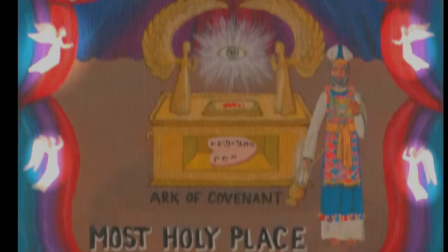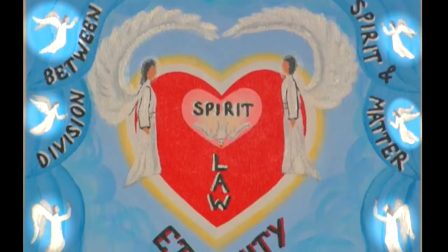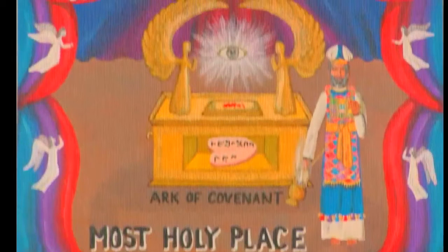On the veil is seen figures of angels typifying the invisible angelic spirit creatures who were created before the physical creation, indicating the division between spirit and matter. This is proven by the pattern of the tabernacle.